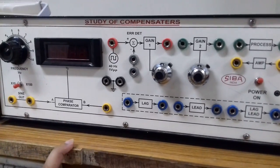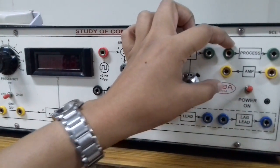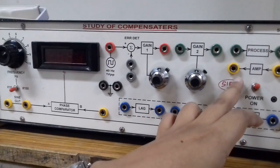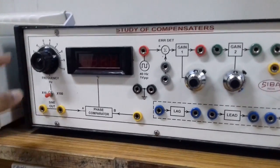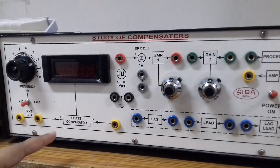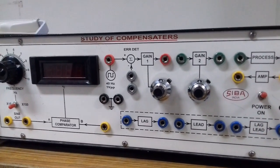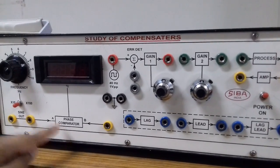To study the characteristics of these compensators we are having a process. To close the system we are having this amplifier. To provide the input at different frequencies we are having this input part over here. To find out the difference between the phase of the input and output we have this phase comparator.